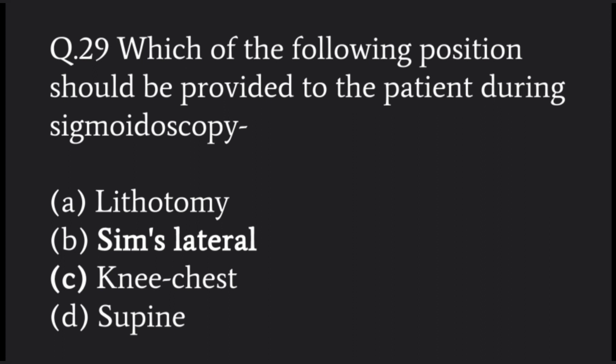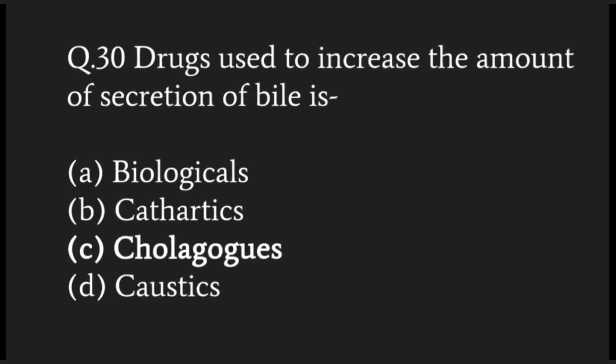The position provided to the patient during sigmoidoscopy is the Sims' lateral position, in which rectal examination is performed. The drug used to increase the amount of secretion of bile is called a cholagogue.